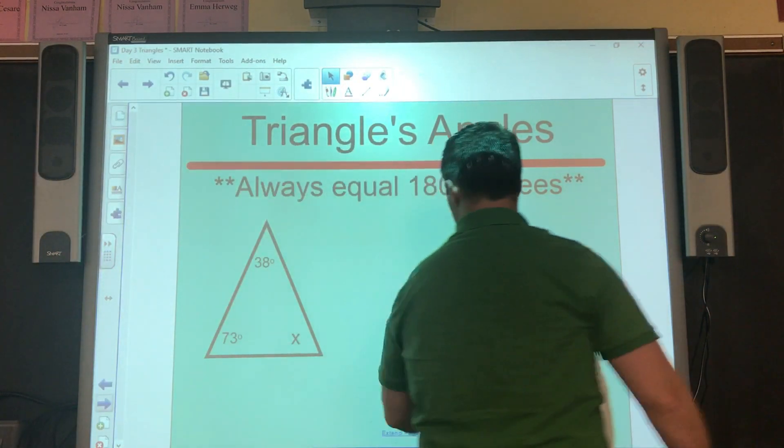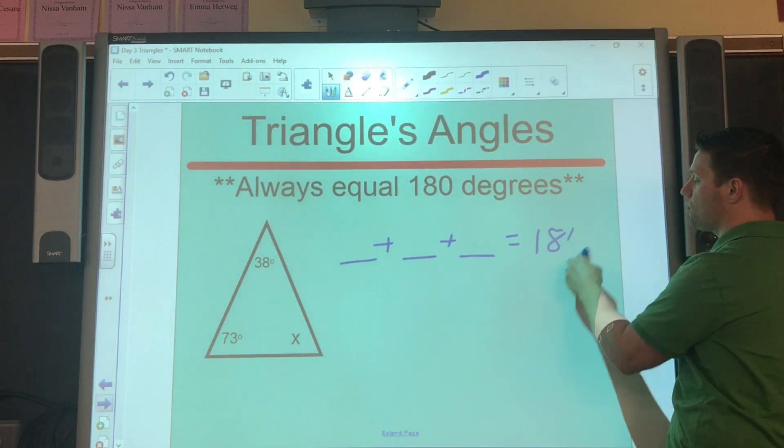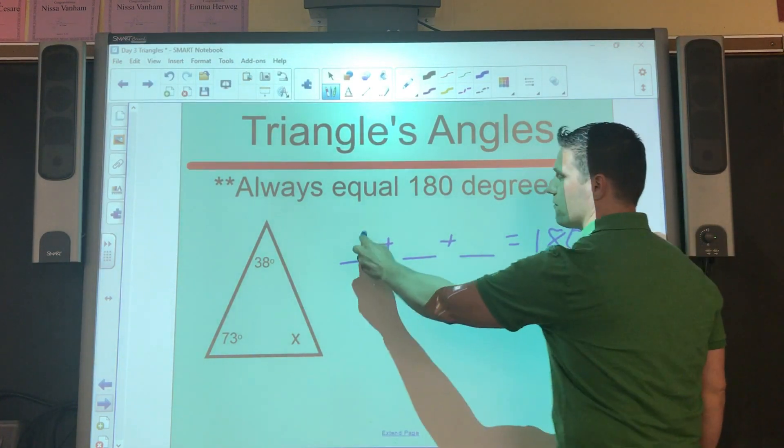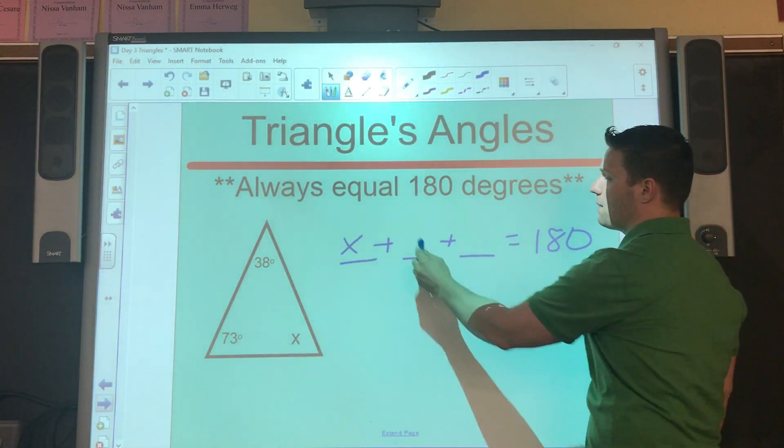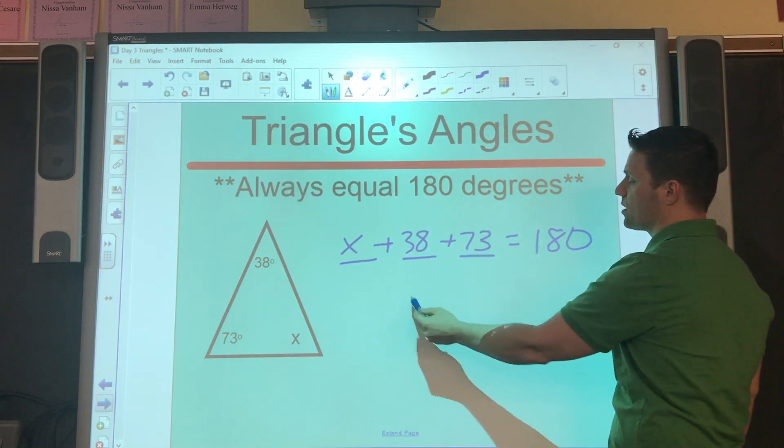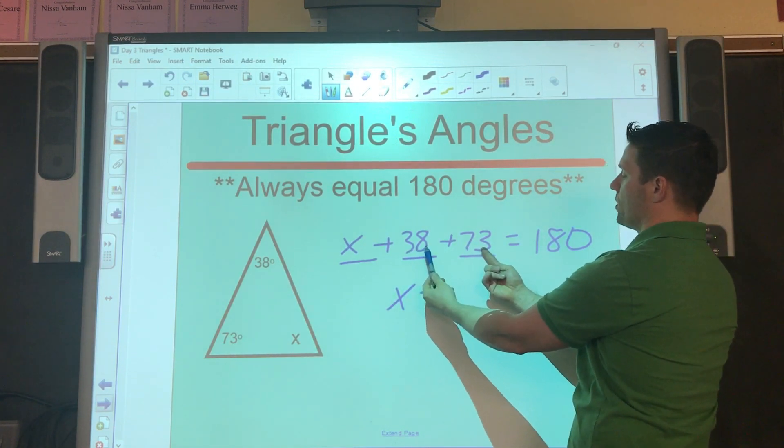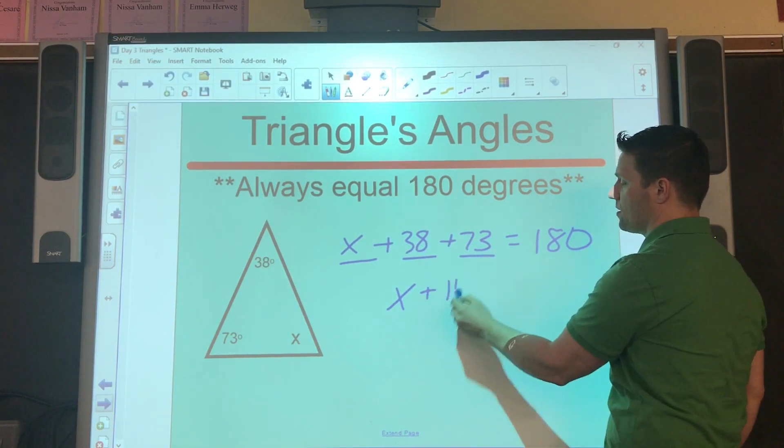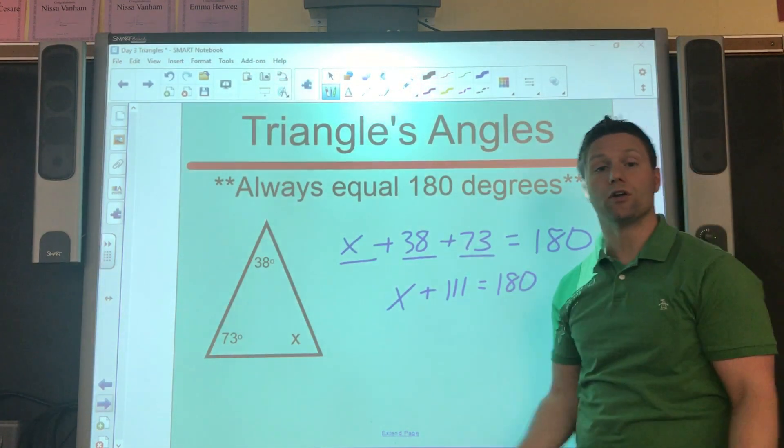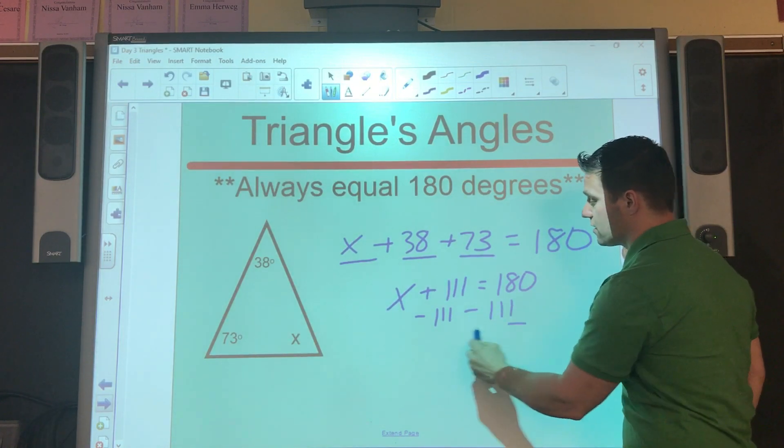So, really what we have here is, we have the three angles, and they're always going to equal 180 degrees. Well, I'm going to make my first angle x, and my second angle's going to be the 38, my third angle's going to be the 73. We already know 73 plus 38 is 100, 110, 111, and I'm going to try to solve for this one. Using algebra, I know I'll subtract 111 on both sides.